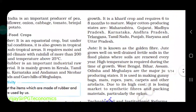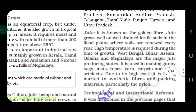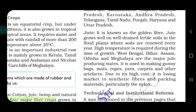The last non-food crop is jute, also known as the golden fiber. A one-mark question: which crop is known as the golden fiber? The answer is jute. Jute grows well in well-drenched fertile soil, in plains where soils are renewed every year. High temperature is required during the time of growth. West Bengal, Bihar, Assam, Odisha, and Meghalaya are the major jute-producing states in India.